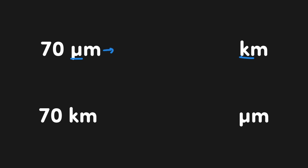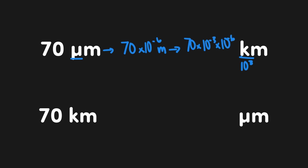First, we get down to base units by replacing micro with 10 to the negative 6: 70 times 10 to the negative 6 meters. Then we add in kilo and multiply by the inverse of kilo, which is 10 to the negative 3. That gives 70 times 10 to the negative 6 times 10 to the negative 3 kilometers, which condenses to 70 times 10 to the negative 9 kilometers.